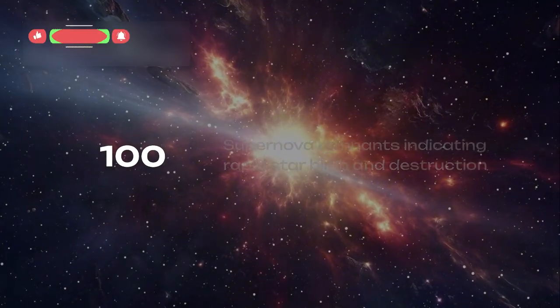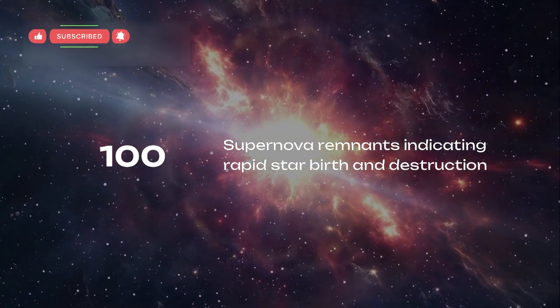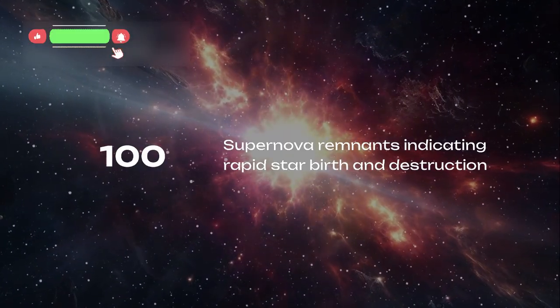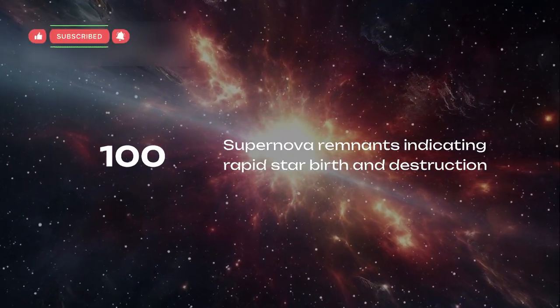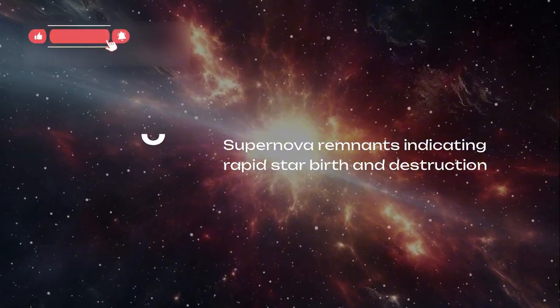Scientists noted bright red and orange filaments that represent complex organic molecules and cosmic dust reshaped by the collision. Radio studies had already shown over 100 supernova remnants in an incredibly small region, proving the galaxy's rapid cycle of star birth and destruction.